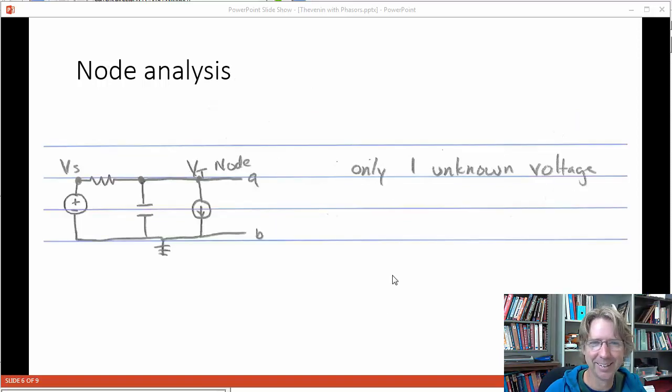To get VT we do a node analysis. This big node here is the A terminal voltage and so that's the one we're solving for. We'll call that VT. Put the ground node down here, this big node at the bottom. We have only one other node here, it's VS. Since the source is connected to ground, that one's known. So only one unknown voltage for this circuit analysis.